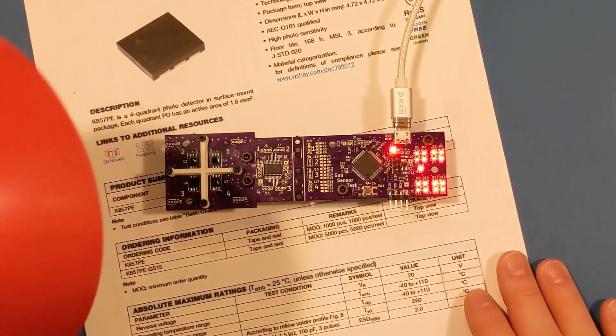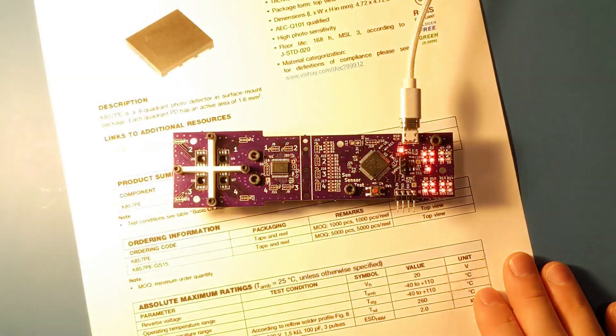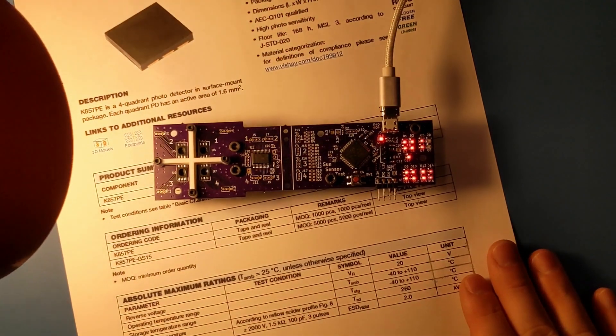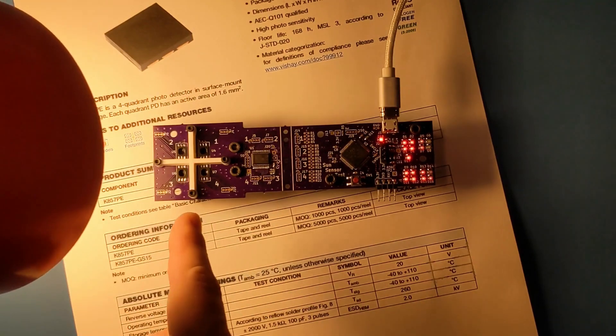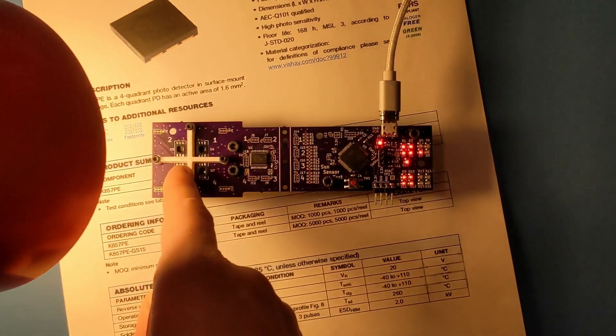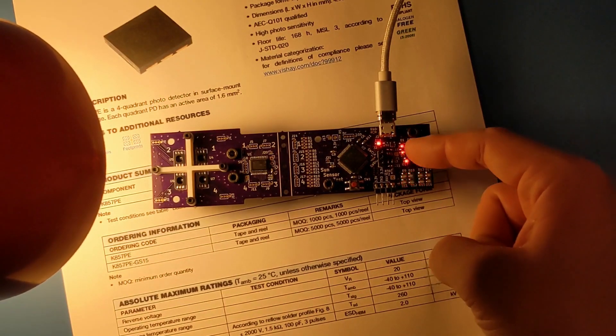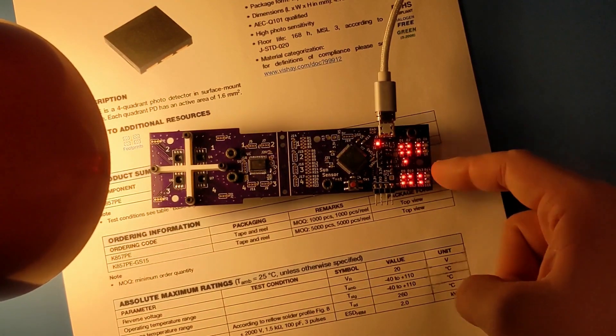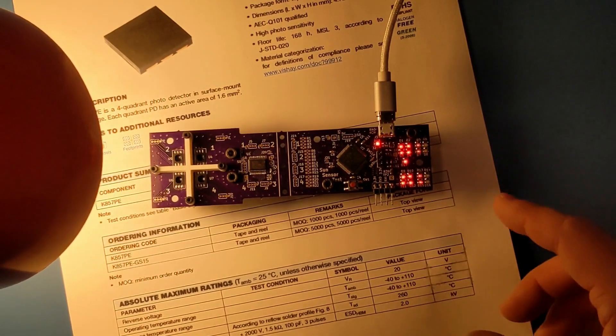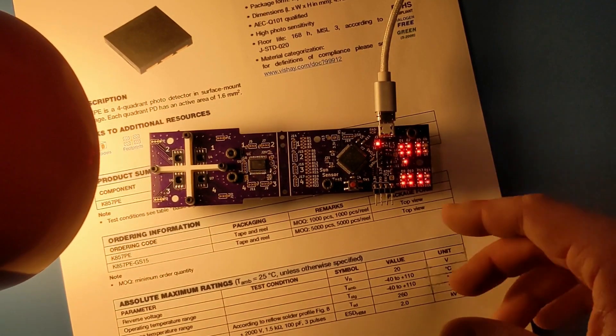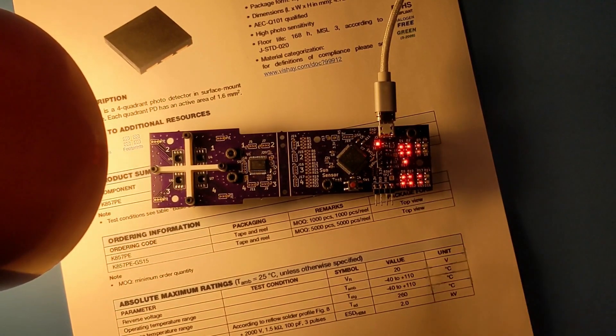And if I turn on this light, you can see that if I point it such that it's really just lighting up these two photodiodes over here, you can see that just these two are lit up, where these are less lit up. And it might be a bit blinky on video. That's just due to how I'm powering these LEDs.